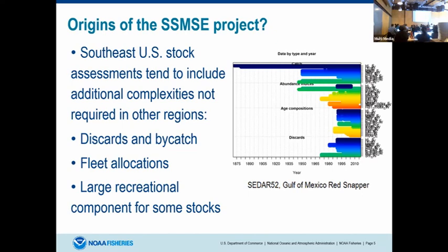Just for context — R4SS is fantastic — but just for context, this is a plot of the data types and time series that go into the Gulf of Mexico red snapper assessment, which is our most data-rich. Essentially we have a two-area model for the Eastern and Western Gulf of Mexico. We have 16 indices of abundance in total. There are many different data inputs and a lot of data compilers that go into this assessment, so it takes quite a bit of time just to get all those different sources of information into the model.